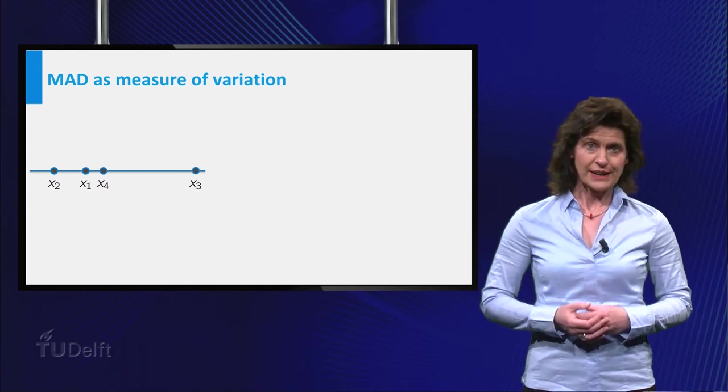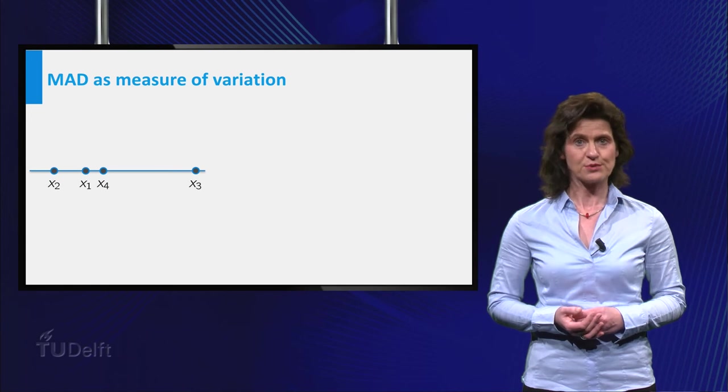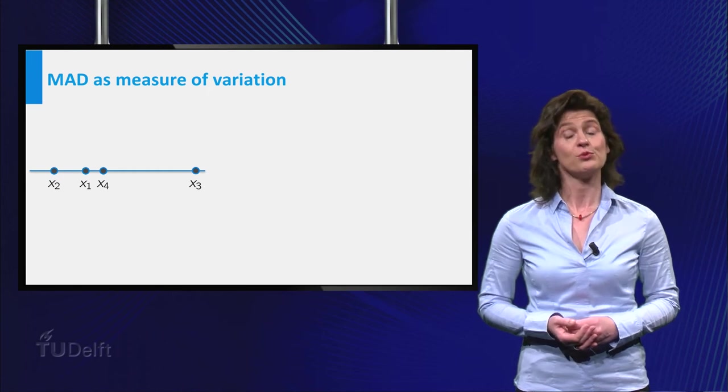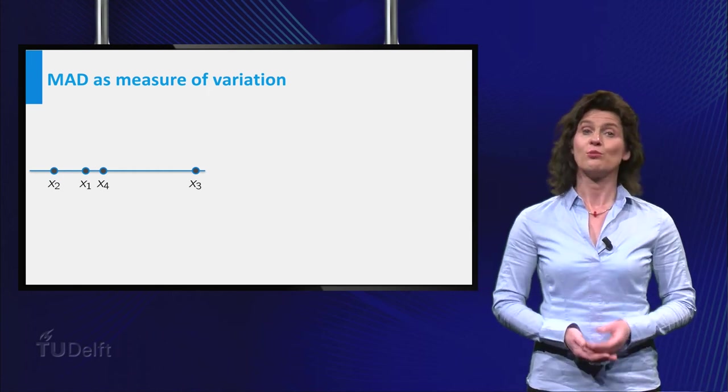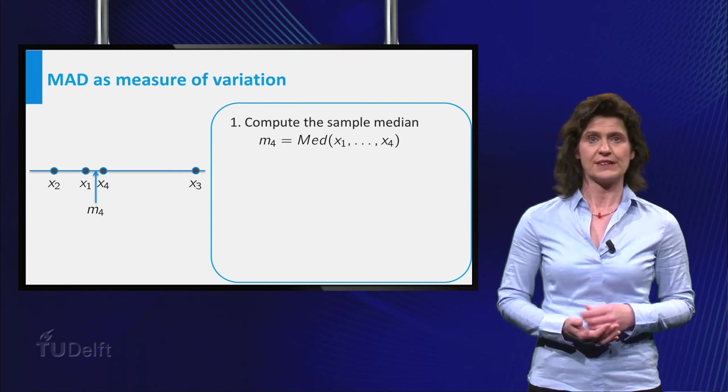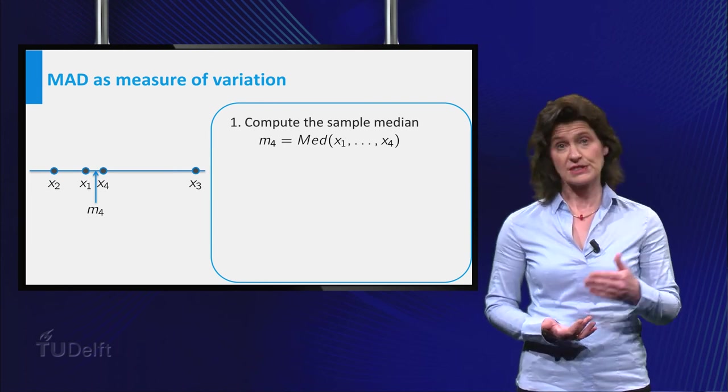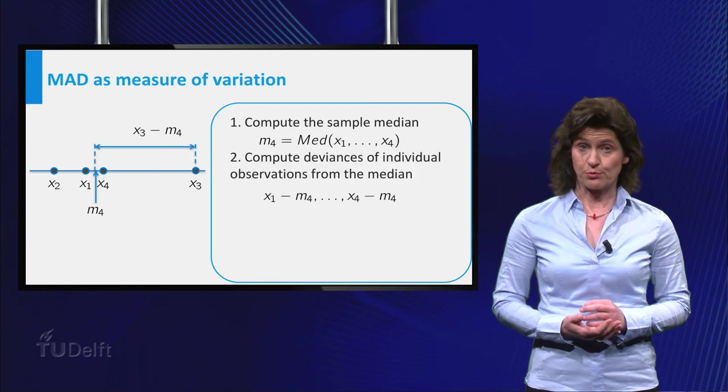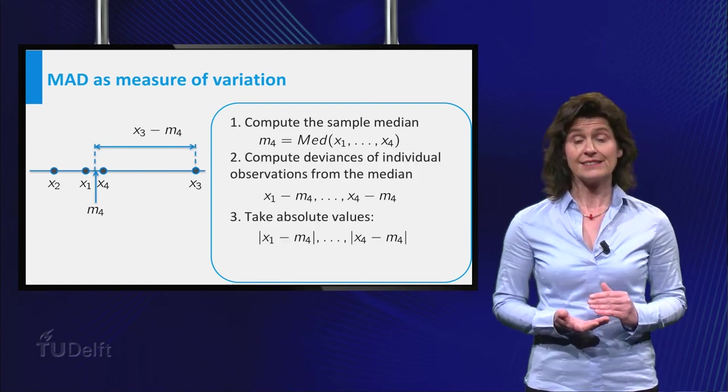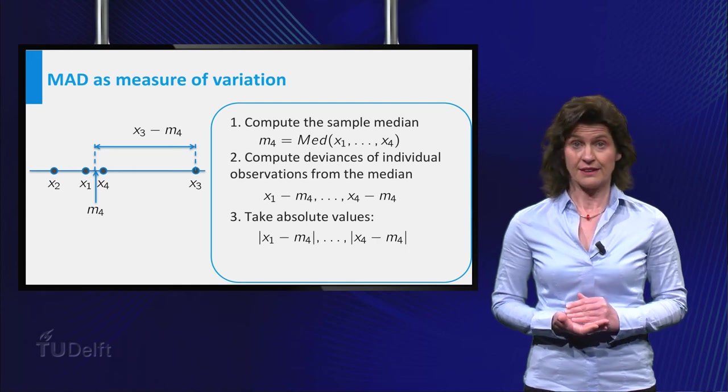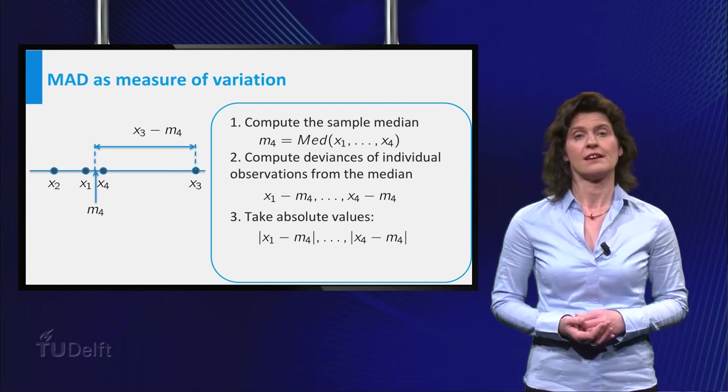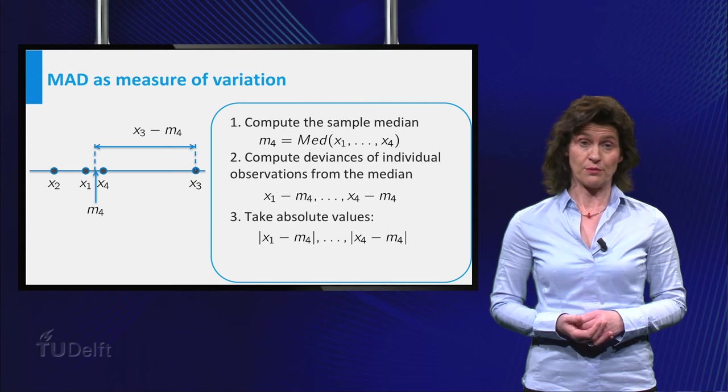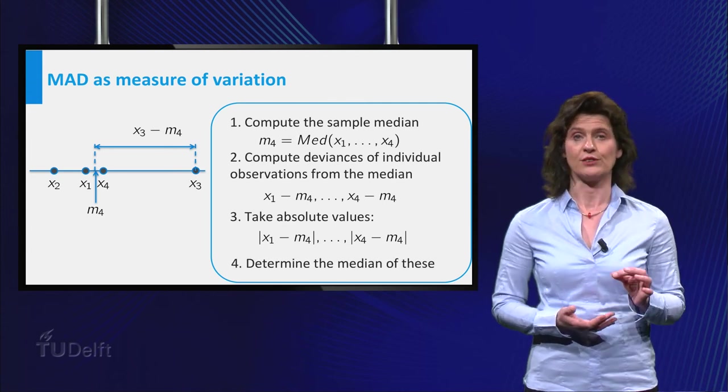Another method to quantify the spread in a dataset is by means of the median absolute deviation, commonly abbreviated to MAD. This MAD can be computed in four steps. First, compute the median of the data. As we have an example with four points here, the median is the average of the second and third observation ordered in magnitude. Then compute for every individual data point the difference with this median and the absolute values of these differences. These are four non-negative numbers. Large values of these numbers indicate that here the data are highly variable. Finally, compute the median of these values.